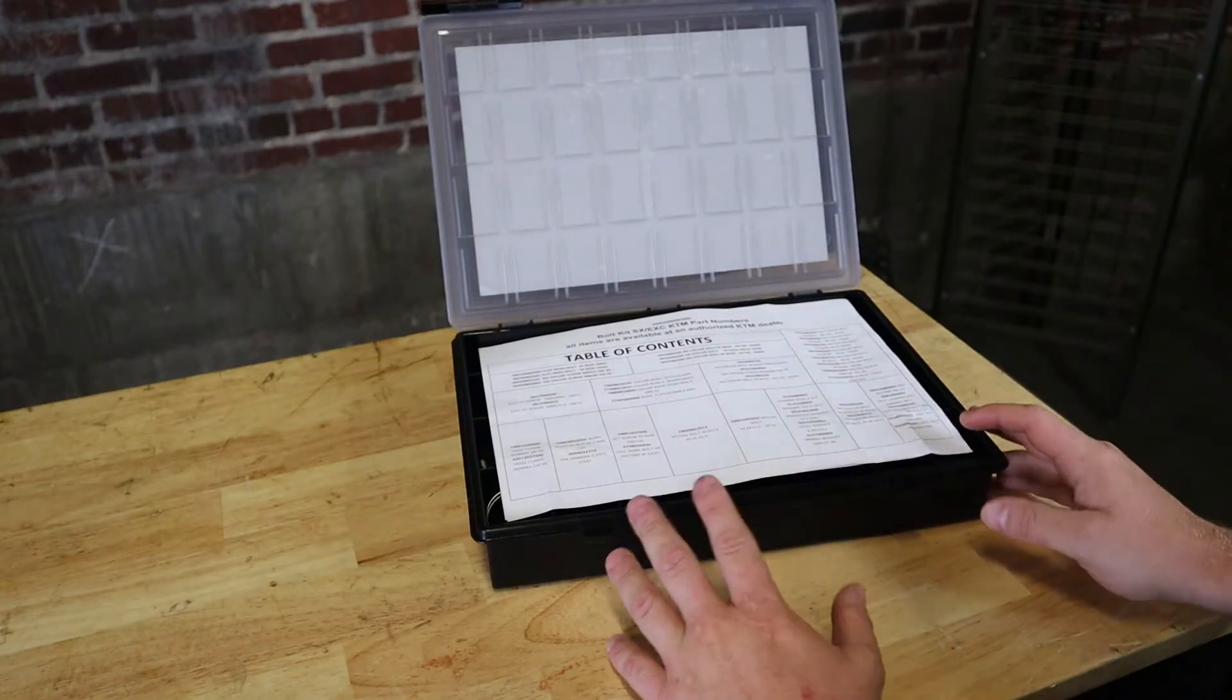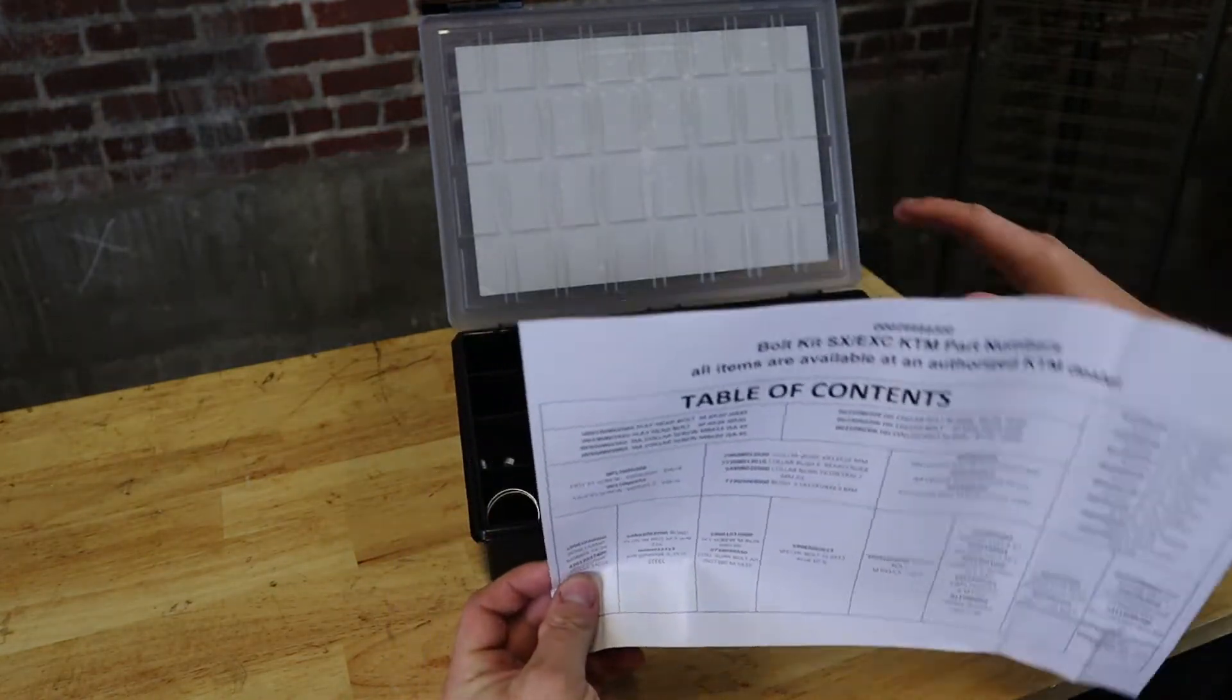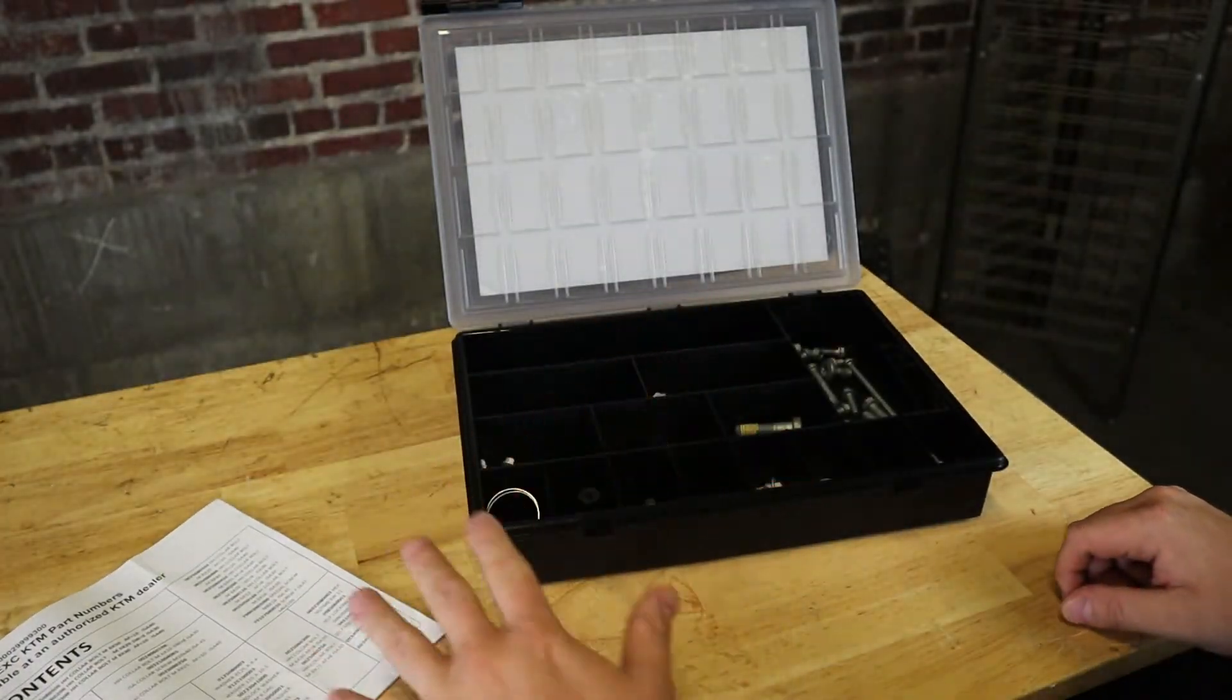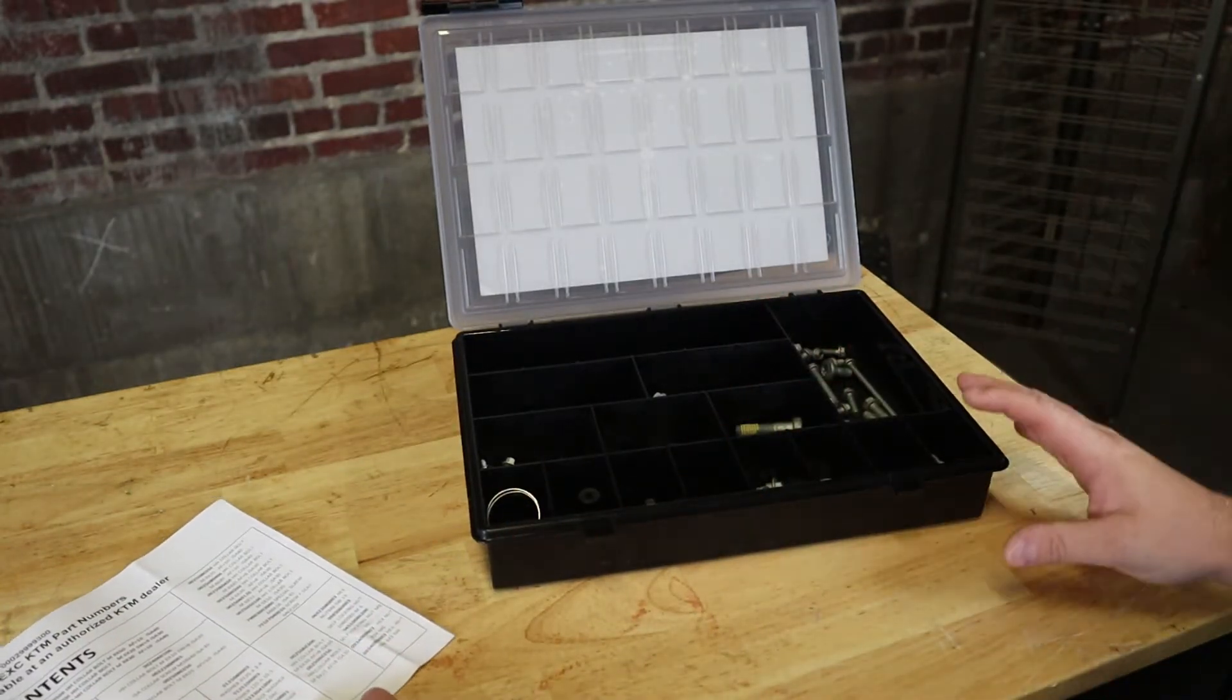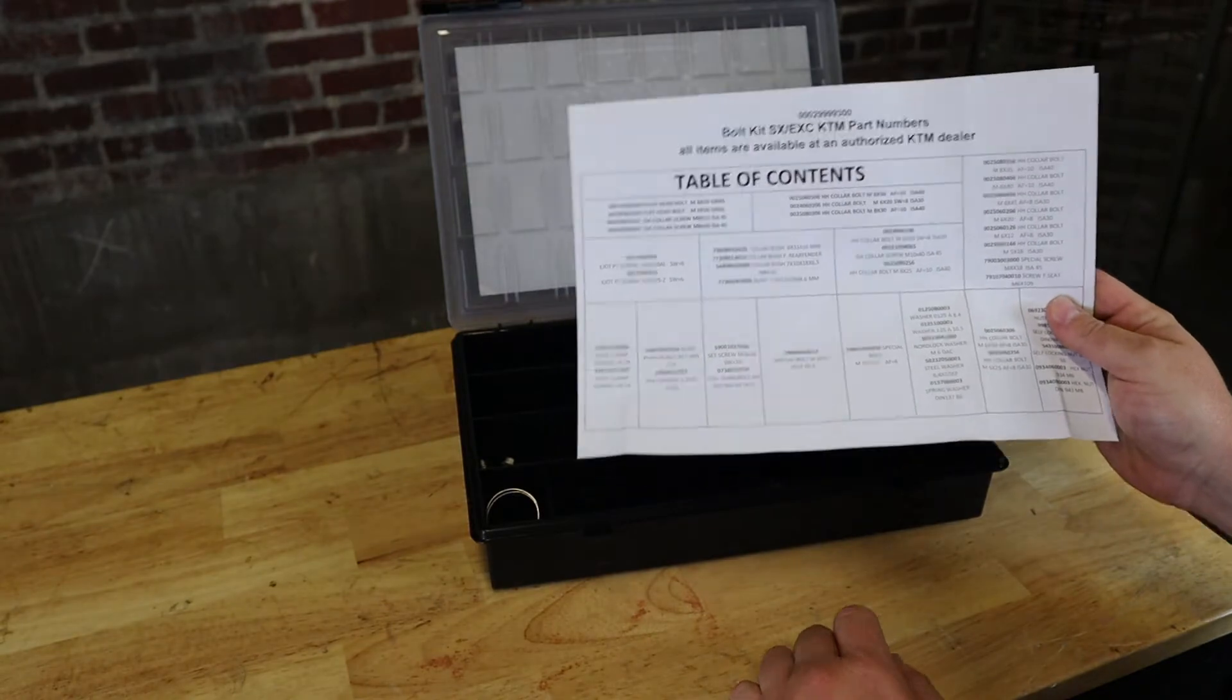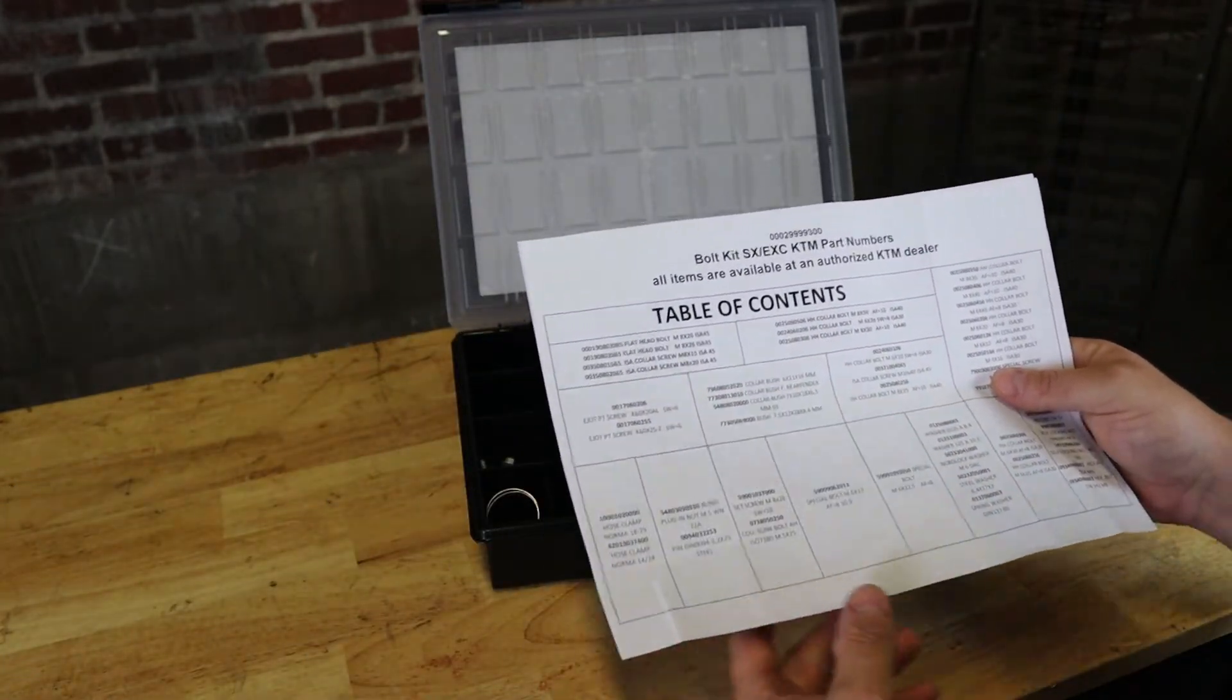So the first thing that's kind of unique to this kit is this table of contents. There's a lot of bolt kits out there on the market, but I haven't seen one that comes with this yet. And a lot of times with this hardware, you may not have another bolt to match it up to. You may not know exactly what size you need, or you may know what size you need but not know which bolt that is. And this solves that problem right there. So it's laid out, shows you exactly what tray it's in and what you can expect to find in that tray.